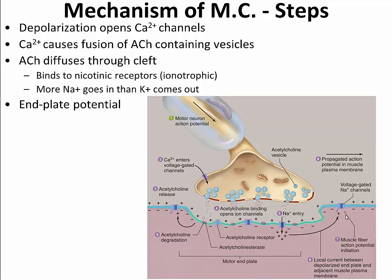That action potential spreads out from the junction to the rest of the muscle fiber. Typically these junctions between the motor neuron and the muscle fiber are found in the middle of the muscle cell, and the action potential spreads toward either end. The depolarization that occurs in the muscle fiber is called an end plate potential, or EPP — which is a bit different than the EPSPs, the excitatory post-synaptic potentials, that occur when one nerve connects to another nerve.